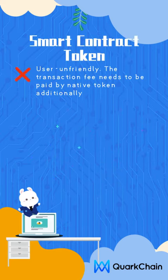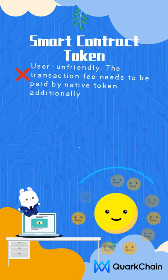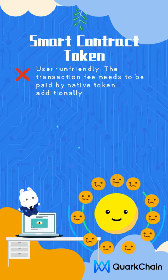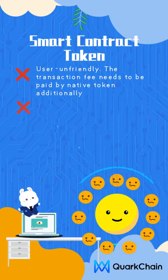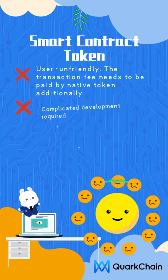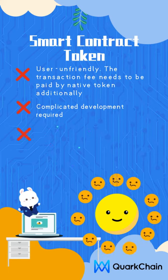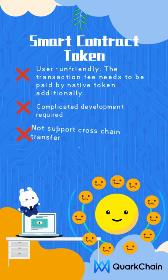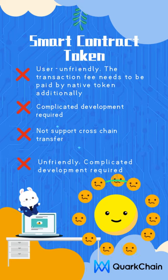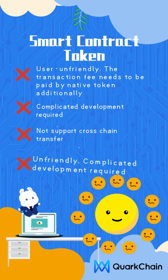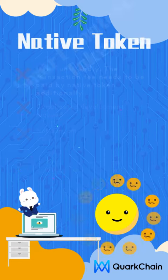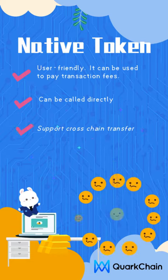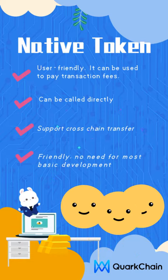A smart contract token cannot be used to pay the transaction fee directly. Instead, you need to use native tokens. The operation process is complicated and the learning cost is high. In addition, other supplementary protocols are not compatible with the original ERC20 protocol, which requires additional development.